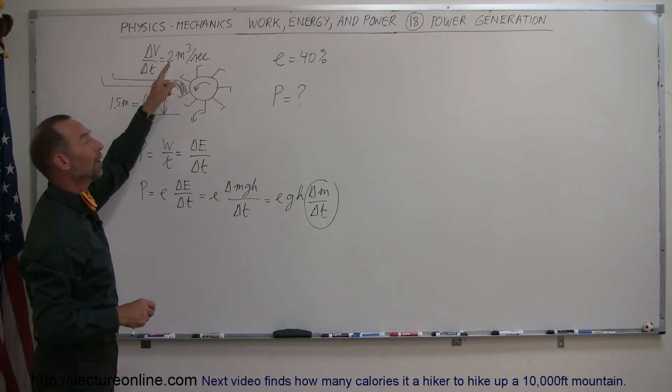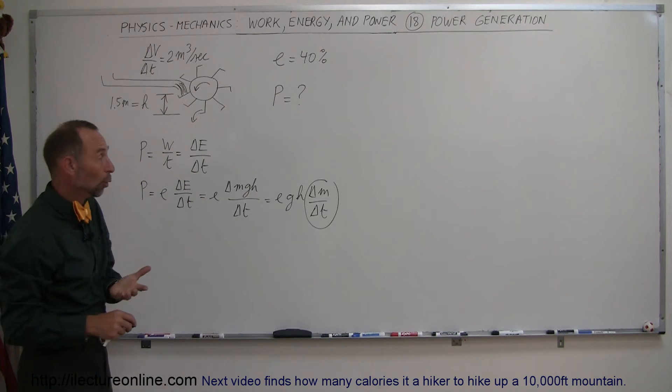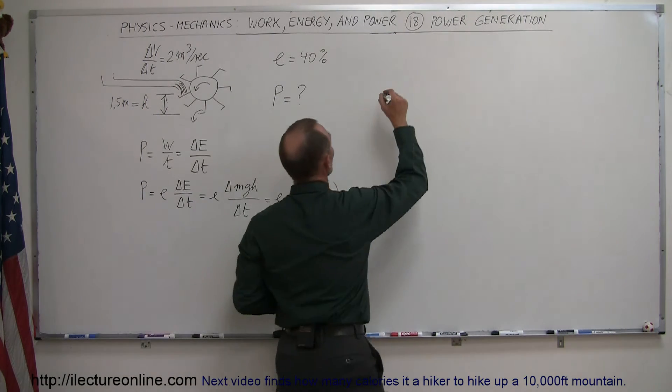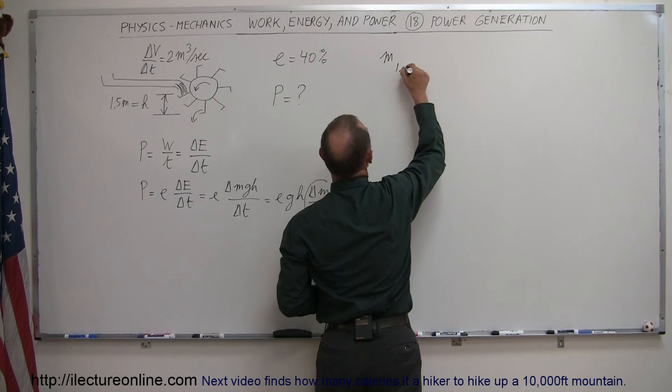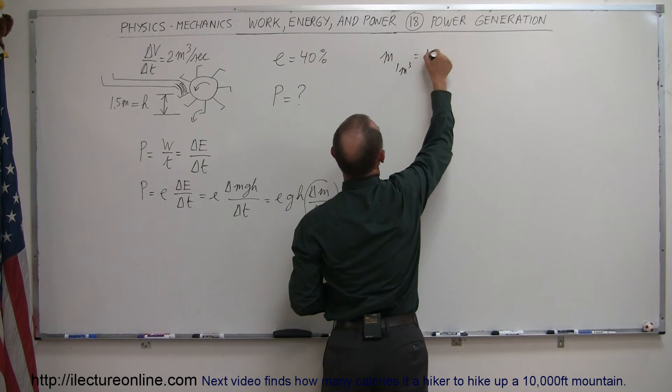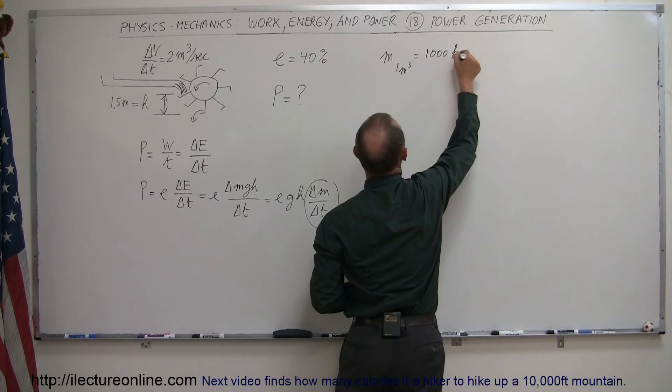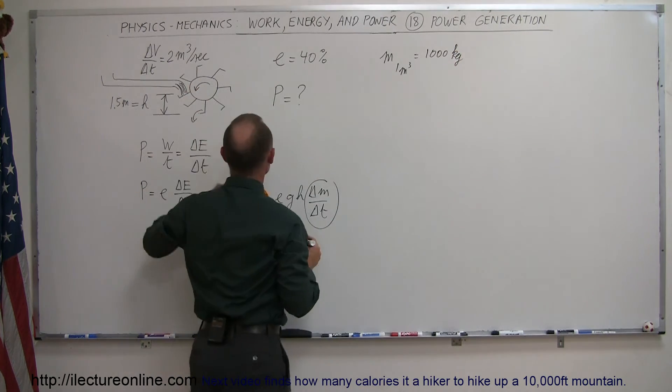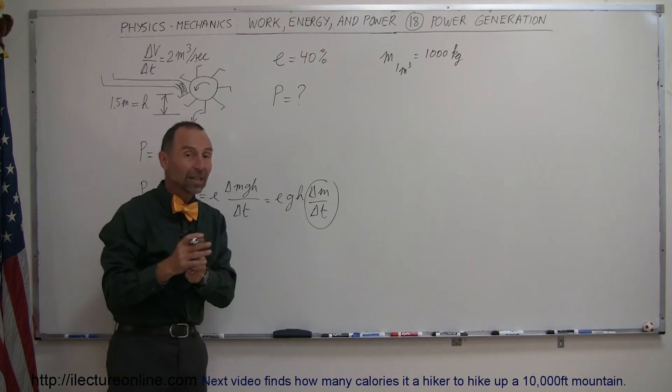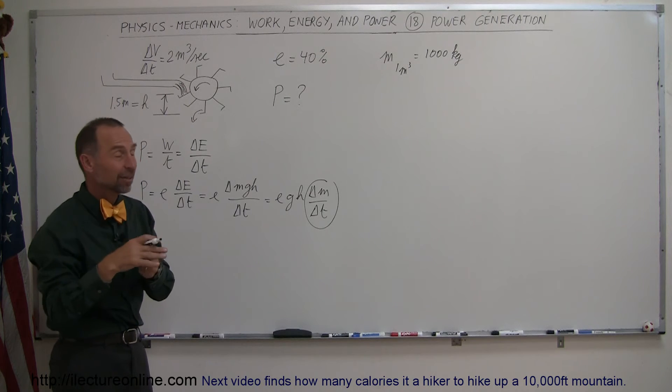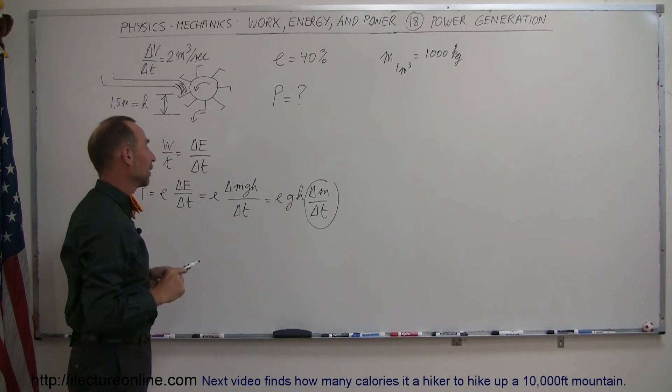A cubic meter of water has a mass of one ton or 1,000 kilograms. So the mass of one cubic meter is equal to 1,000 kilograms, which means with 2 cubic meters, we have 2,000 kilograms coming out of the pipe every single second, making that turbine turn around.